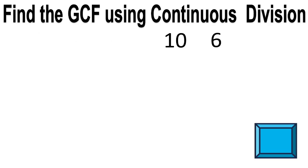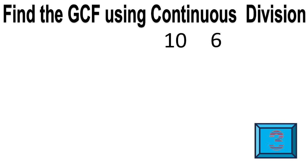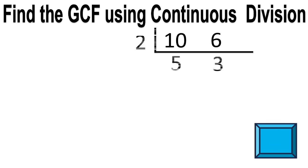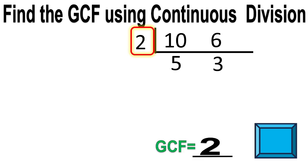Quiz time! Let's answer this. Find the greatest common factor using continuous division. You only have 10 seconds to answer. Find the greatest common factor of 10 and 6. The answer is 2. The greatest common factor is 2.